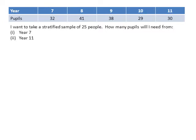So the question is, I want to take a stratified sample of 25 people. How many pupils will I need from, firstly, year 7, and then year 11?